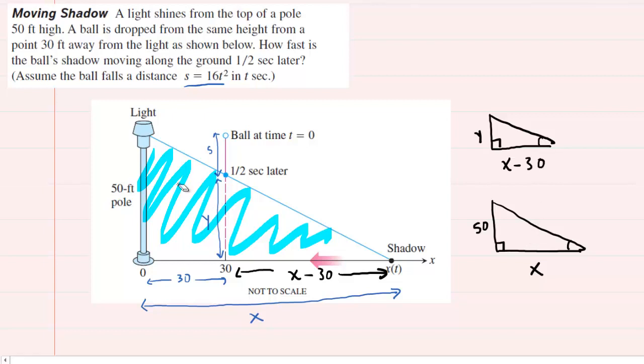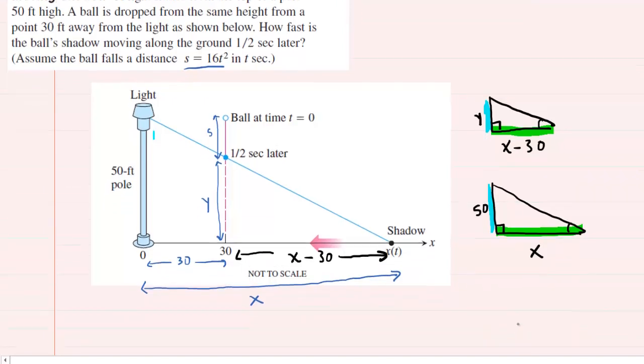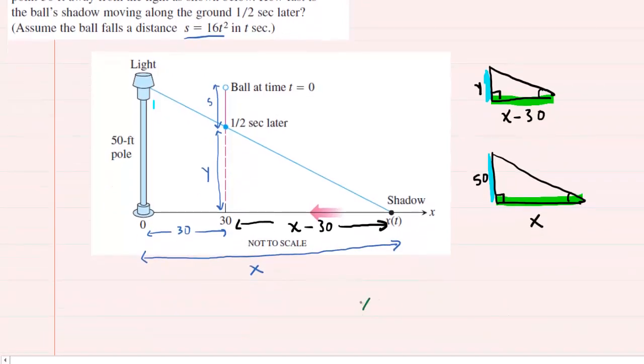And because they are similar, we can set up a proportion. And so we're going to set up the following proportion. We'll have x minus 30 related to x, and then similarly, y will be related to the side 50. So why don't we slide down a little here and set up the proportion. x minus 30 is to x as y is to 50.